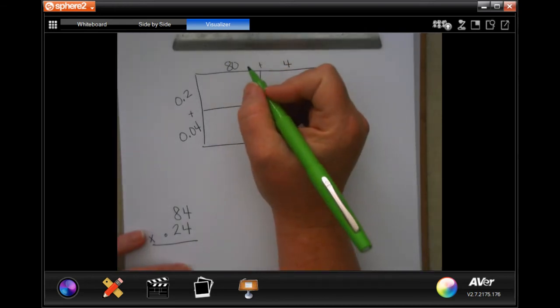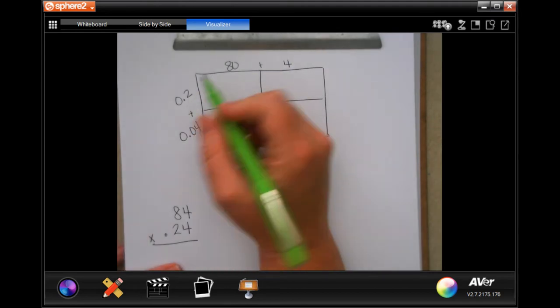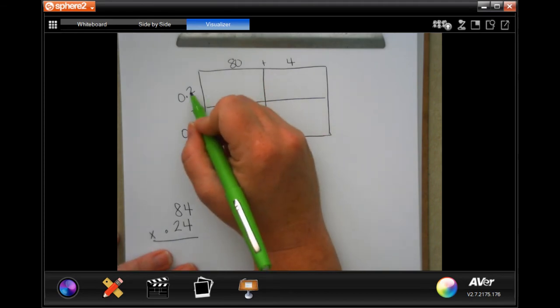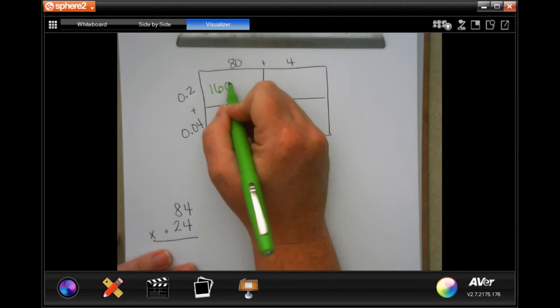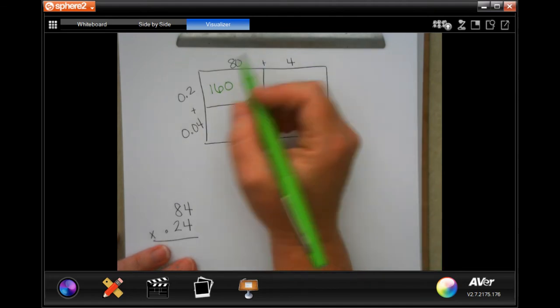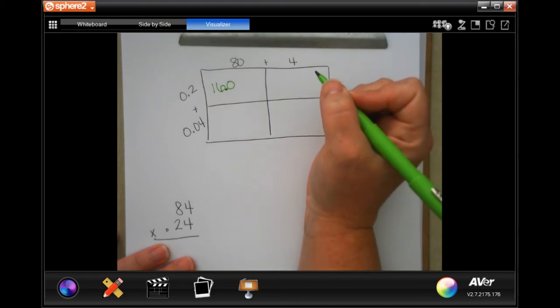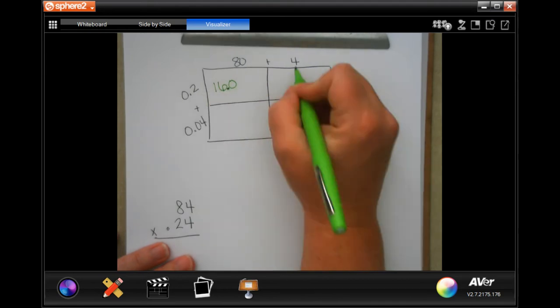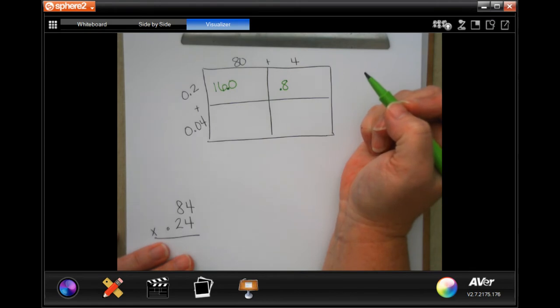We're going to go ahead and put in our answers from each one of these. So 2 times 8 is 16 and 2 times 0 is 0. Now I need to go in one place and put my decimal there, because I went in one place here for the decimal.